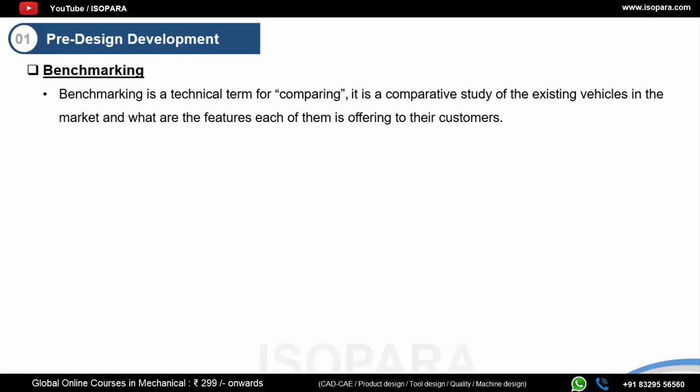Benchmarking looks at what vehicles are offering, their features, price range, and much more. If you were to design a vehicle, you have your budget and range, and you decide what to offer customers. For example, Ford is offering its entry-level SUV at 10 lakh rupees, while Hyundai is offering at 12 lakh rupees — comparing design intent, features, mileage, engine, and all of these things.